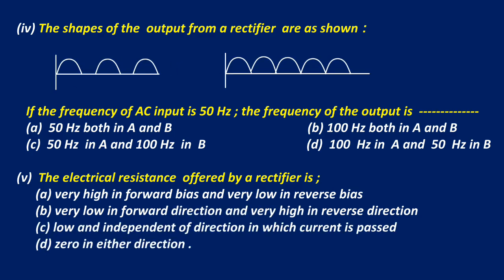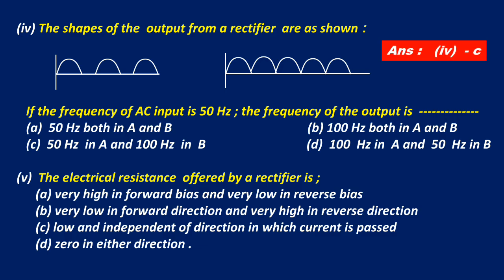Question 4: The shapes of the output from a rectifier are as shown. If the frequency of AC input is 50 Hz, the frequency of the output is? The correct answer is C — 50 Hz in A and 100 Hz in B. Question 5: The electrical resistance offered by a rectifier is? Option B — very low in forward direction and very high in reverse direction.